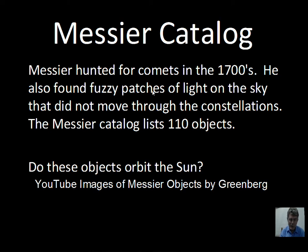In his lifetime the catalog did not have 110 objects, but he took notes of things he had observed and not put in his catalog. Later, the catalog was officially expanded to about 110 objects. It's a very popular list for amateur astronomers. The objects tend to be the brighter, interesting clusters and galaxies, planetary nebulae, and so forth. It's worth searching YouTube for 'Greenberg and Messier' for more on this.